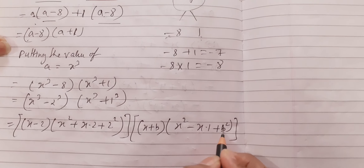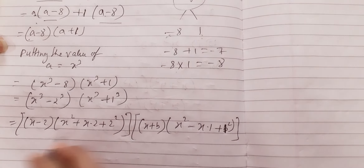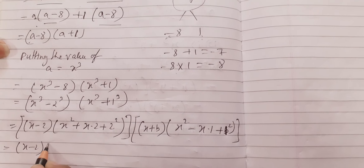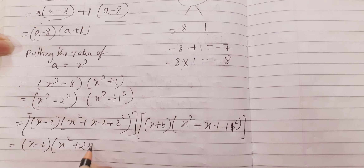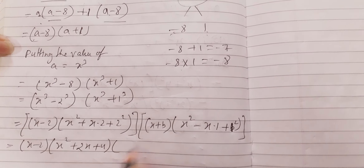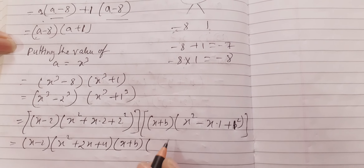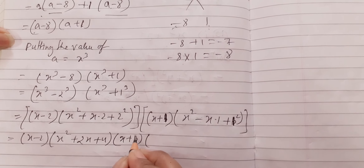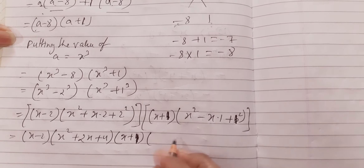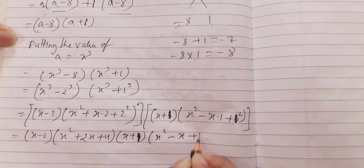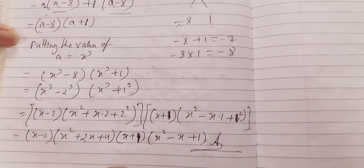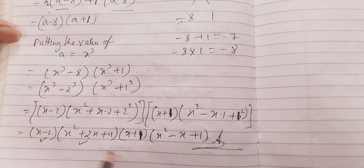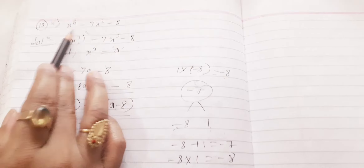Substituting values: the first factor is (x - 2), the second factor is (x² + 2x + 4), the third factor is (x + 1), and the fourth factor is (x² - x + 1). So we have our answer — these are the four factors of this algebraic expression.